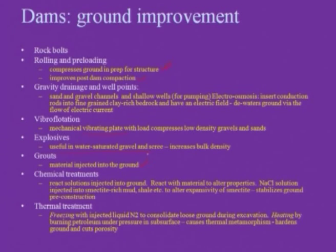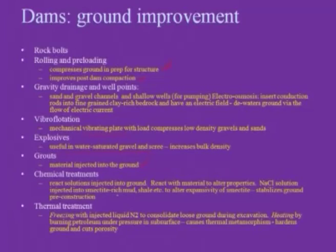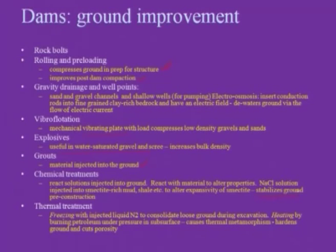Chemical treatment involves injecting reactive solutions into the ground to alter the properties of the soil. For example, a sodium chloride solution injected into smectite-rich mud will react with the mud and stabilize the ground. These techniques — rolling and preloading, gravity drainage, well points, vibro-flotation, explosives, grouts, and chemical treatments — all improve load-bearing properties.